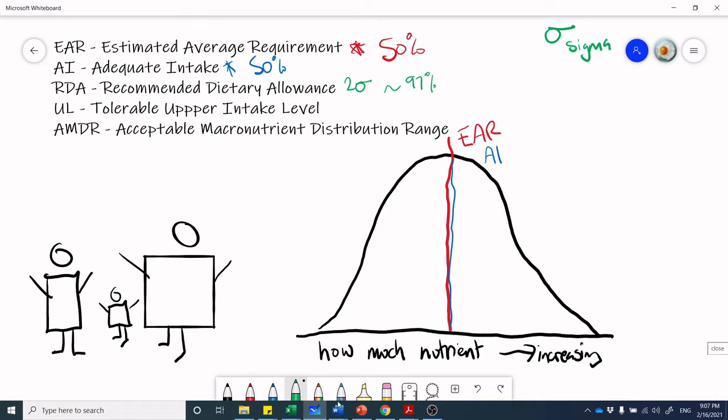Let's jump to RDA, Recommended Dietary Allowance. This one is slightly different in that what we're covering off is two standard deviations of the population, or it's approximately 97 percent of the population covered. That's sigma.